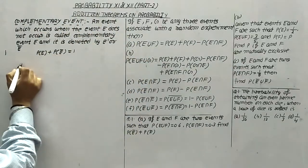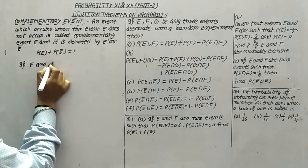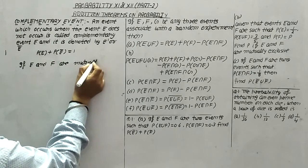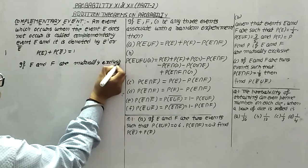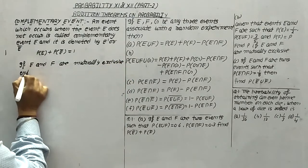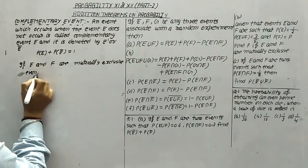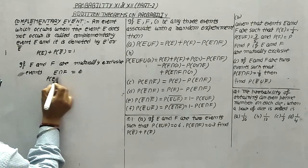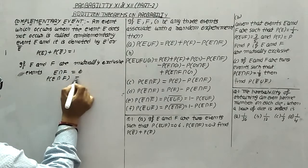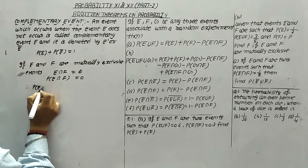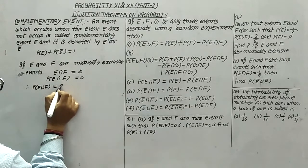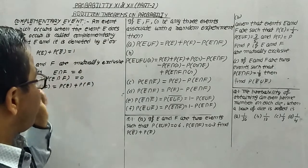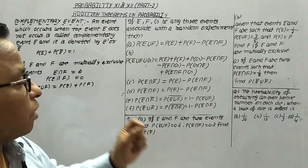In the case where E and F are mutually exclusive events, we have E intersection F always equals phi. This means the probability of E intersection F equals 0. Therefore, the rule is converted into: the probability of E union F equals the probability of E plus the probability of F. This is the other rule we obtain when events are mutually exclusive.